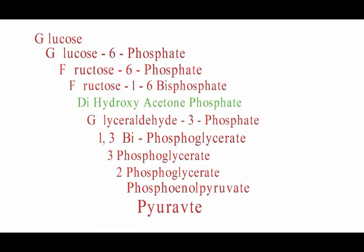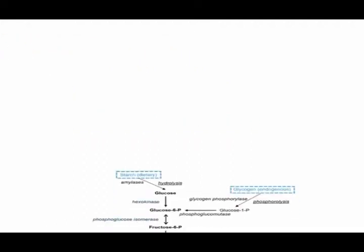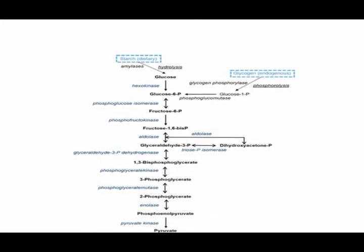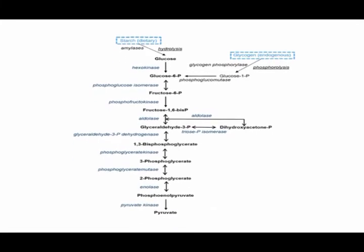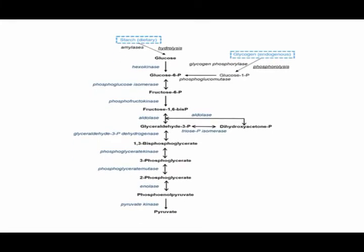Prepare: PEP — Phosphoenolpyruvate. And pizza: the ultimate product is Pyruvate. This is how we learn all the products involved in the glycolytic reaction.